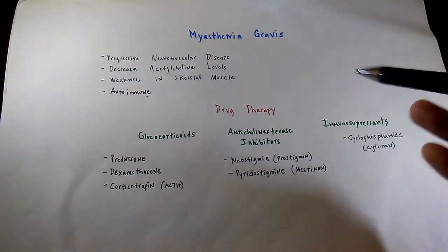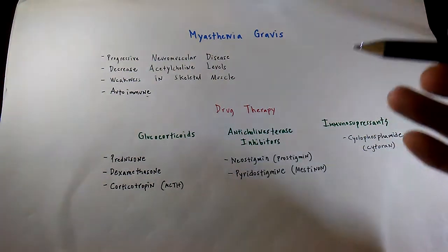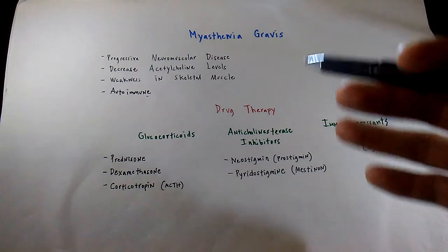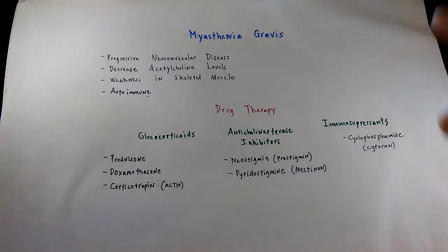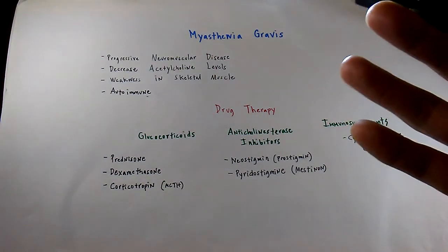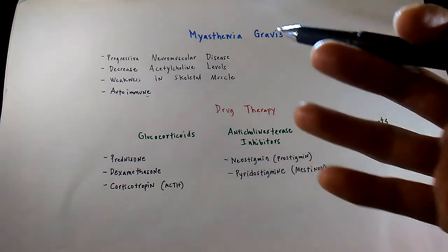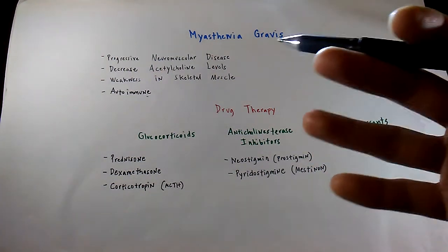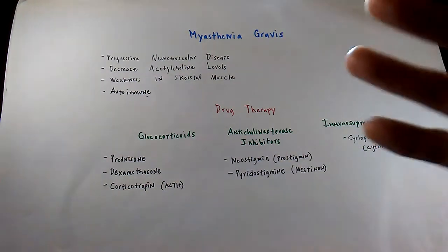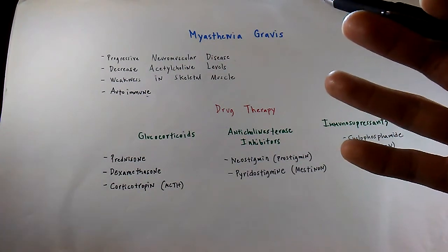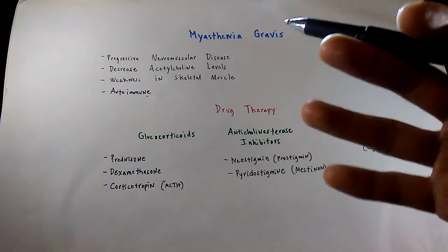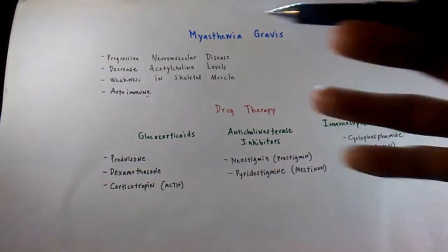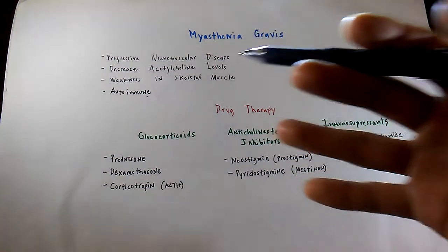We're going to briefly go over myasthenia gravis. Basically, what occurs is that your own antibodies block or destroy the acetylcholine receptors between the nerves and the muscles. This can result in the loss of nerve impulses, and we do need those nerve impulses because this is what causes the muscles to contract. Therefore, that loss of muscle contraction is basically what's causing our patient to have drooping in the eyes or difficulty swallowing.